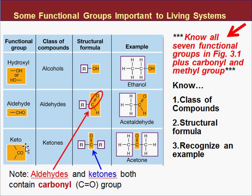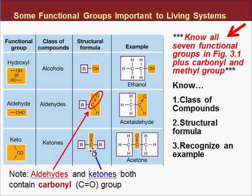The next functional group is keto, which creates a group of compounds called ketones. This is an internal functional group found within the molecule — a carbon double-bonded to an oxygen. The example is acetone, and the name '-tone' tells you it's a ketone.